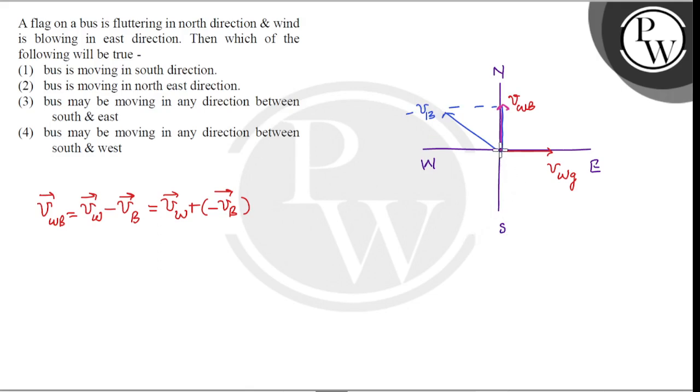This is the direction of velocity of bus with respect to ground. So this is the direction south-east. The bus may be moving in any direction between south and east. Answer is 3. I hope you understood the solution, thank you.